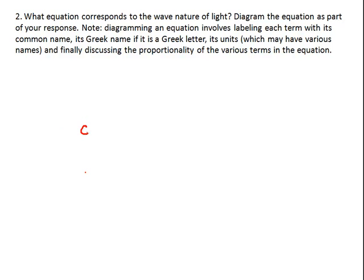The equation is C equals lambda times nu. C is the speed of light. We will be using it as a constant. In a vacuum, it is 3e to the 8th, which is the same as 3 times 10 to the 8th meters per second. It is just the notation I prefer.